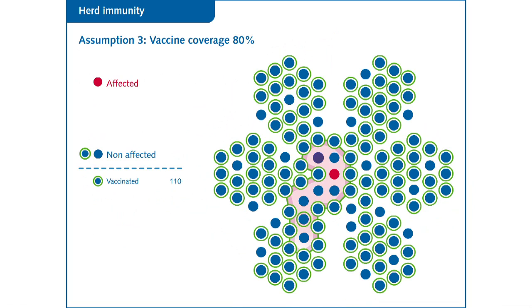Indeed, high vaccination coverage directly protects those who can be reached by the healthcare system and indirectly protects those who are less advantaged and cannot be reached. This is why vaccines play such an important role in public health policy.